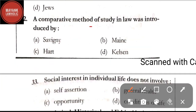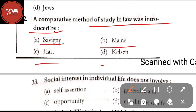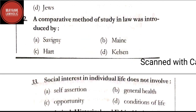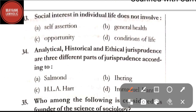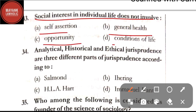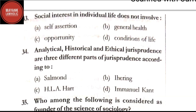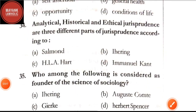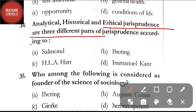Question number 32: a comparative method of study in law was introduced by — option A: Selectme; option B: Maine; option C: Hart; option D: Kelsen. The correct answer is option B, Maine. Question number 33: social interest in individual life does not involve — option A: self-assertion; option B: general health; option C: opportunity; option D: conditions of life. The correct answer is option A, self-assertion.